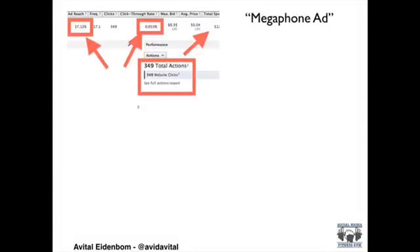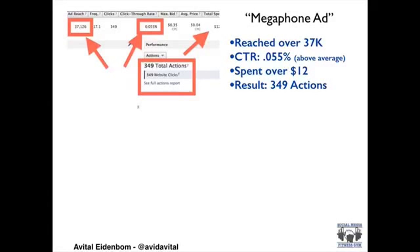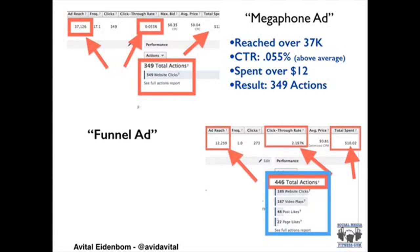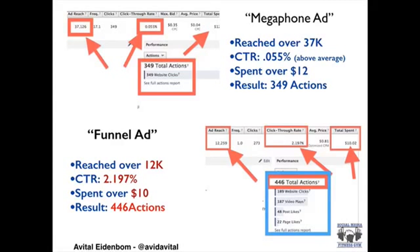Here's an example of a Facebook ad from a client who used the megaphone approach — they created an ad without using Facebook Insights or Graph Search to understand who was truly engaging with their content. That ad reached over 37,000 people and saw a click-through rate of 0.055%, which is above the average of about 0.01%. However, they spent over $12 and only saw 349 total actions — website clicks, page likes, and so on. I then created a similar ad using Facebook Insights and Graph Search. In just the first two days, it reached over 12,000 people.